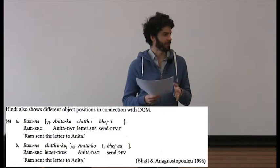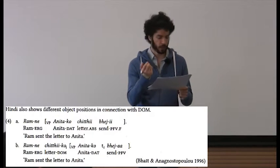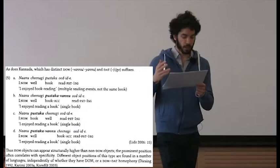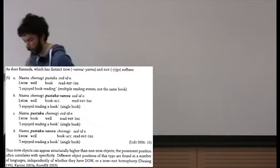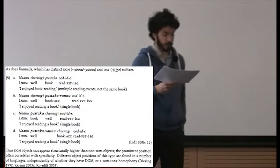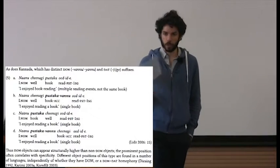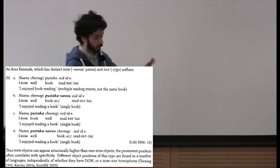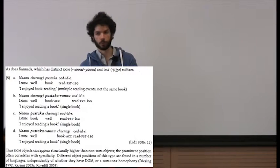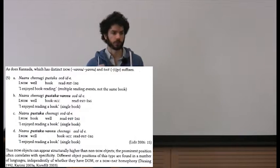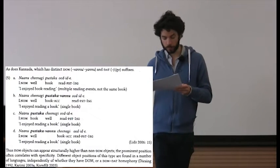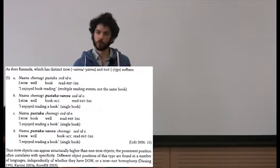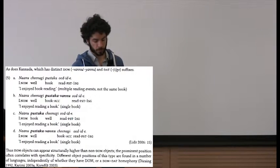Hindi also shows different object positions in connection with differential object marking, seen in examples 4a and b. We have a ditransitive with the verb 'send': 4a shows 'Ram to Anita a letter sent,' where the direct object 'letter' doesn't have overt case marking. But 4b has the homophonous 'ko' on both the direct object and an indirect object, giving a different object position. One could suggest that the spell-out of this homophonous element comes about because of a structurally high position in the clause.